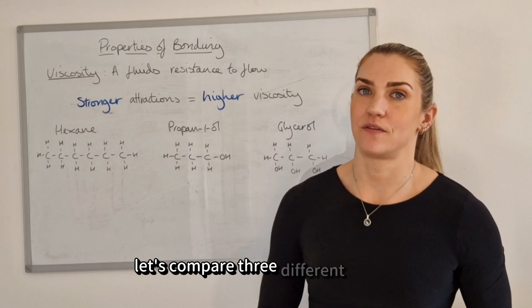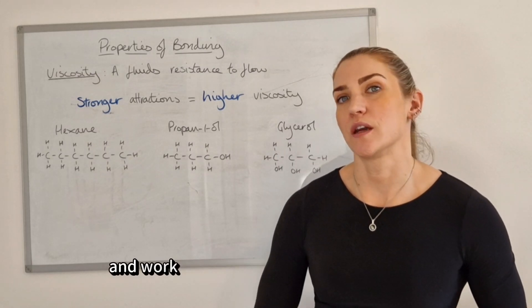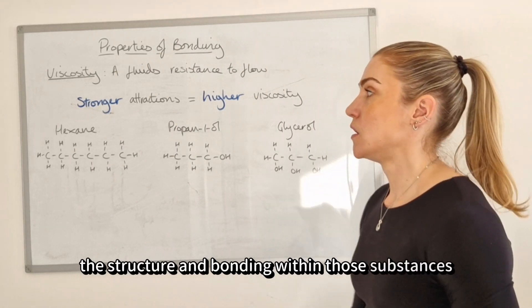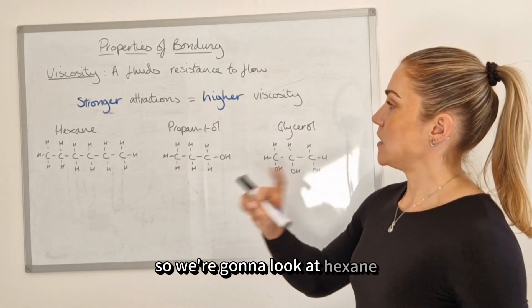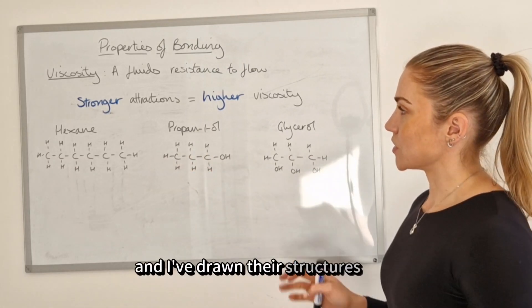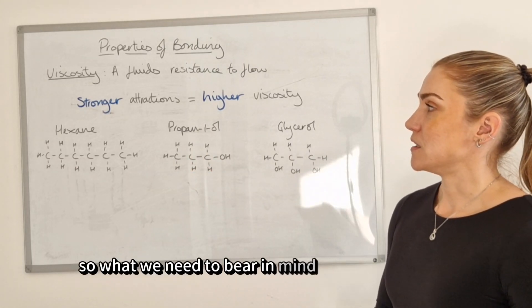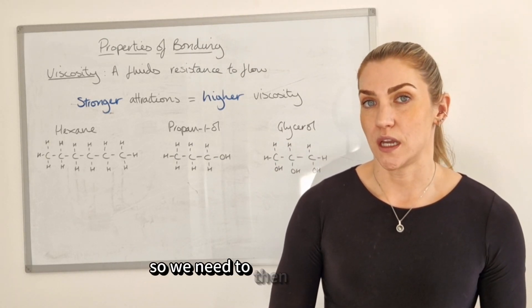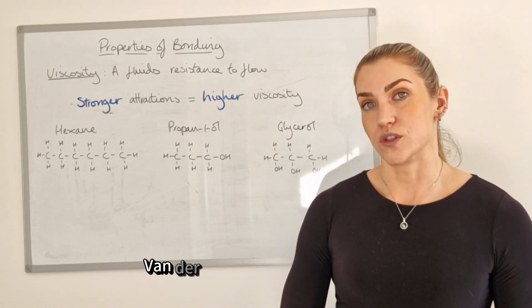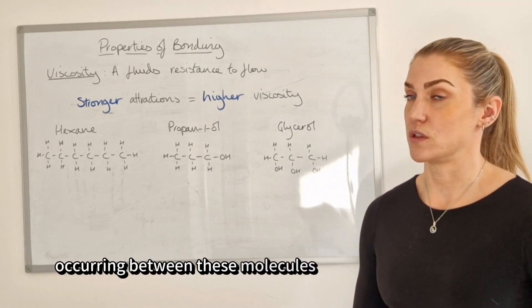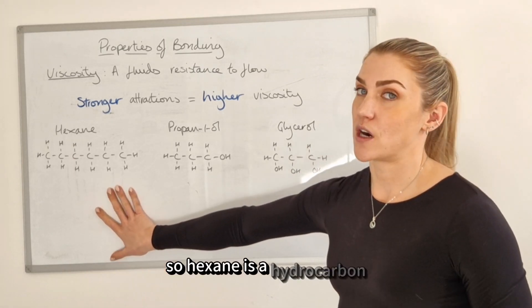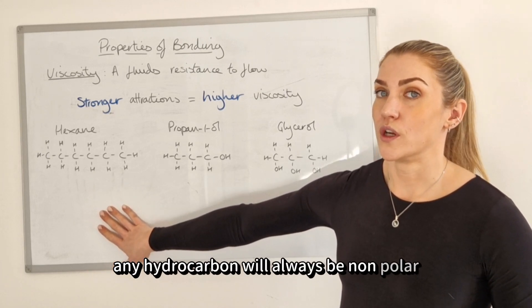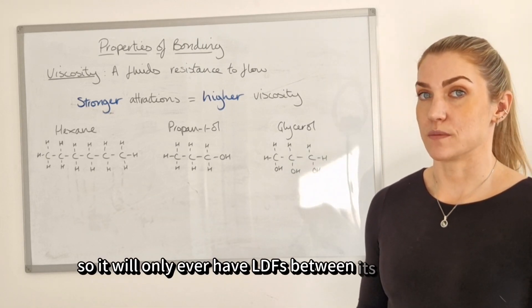Let's compare three different liquids to work out which would be the most viscous based on structure and bonding: hexane, propan-1-ol, and glycerol. The stronger the attractions between the molecules, the higher the viscosity. Hexane is a hydrocarbon, and by rule of thumb any hydrocarbon is non-polar, so it will only ever have London dispersion forces (LDFs) between its molecules.